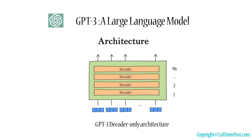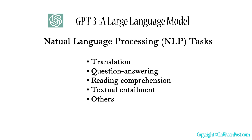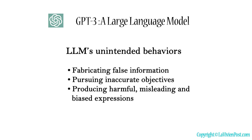It consists of 96 layers of transformer decoders. GPT-3 achieves strong performance on many natural language processing tasks, including translation, question answering, reading comprehension, textual entailment, and many others. However, these models may sometimes exhibit unintended behaviors such as fabricating false information, pursuing inaccurate objectives, and producing harmful, misleading, and biased expressions.